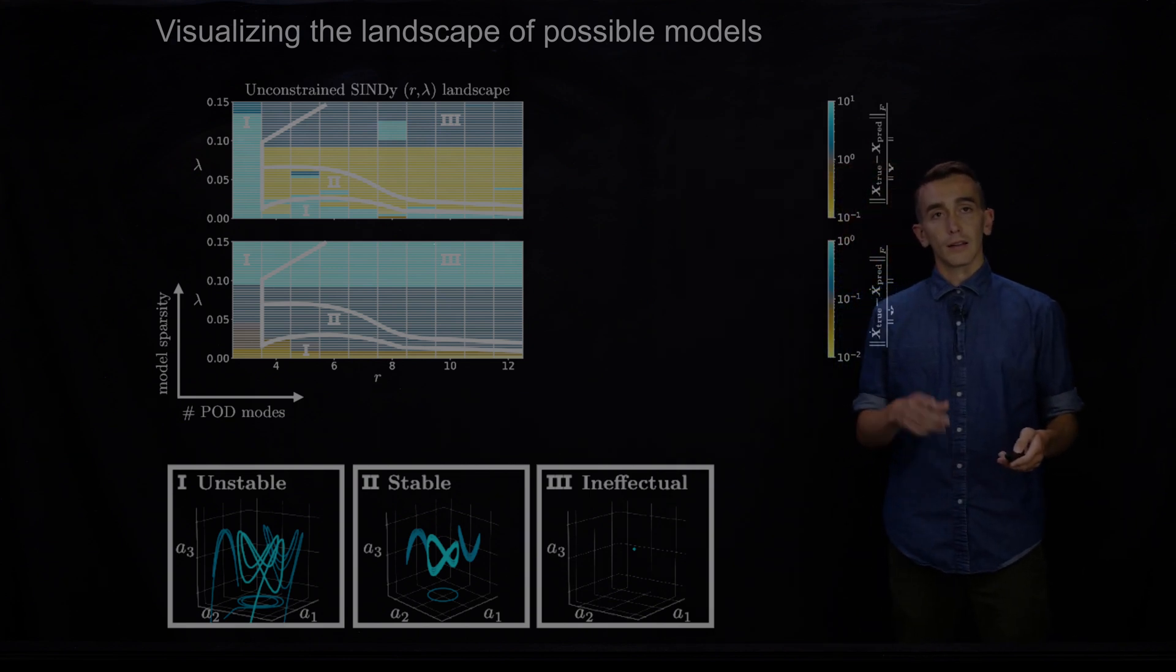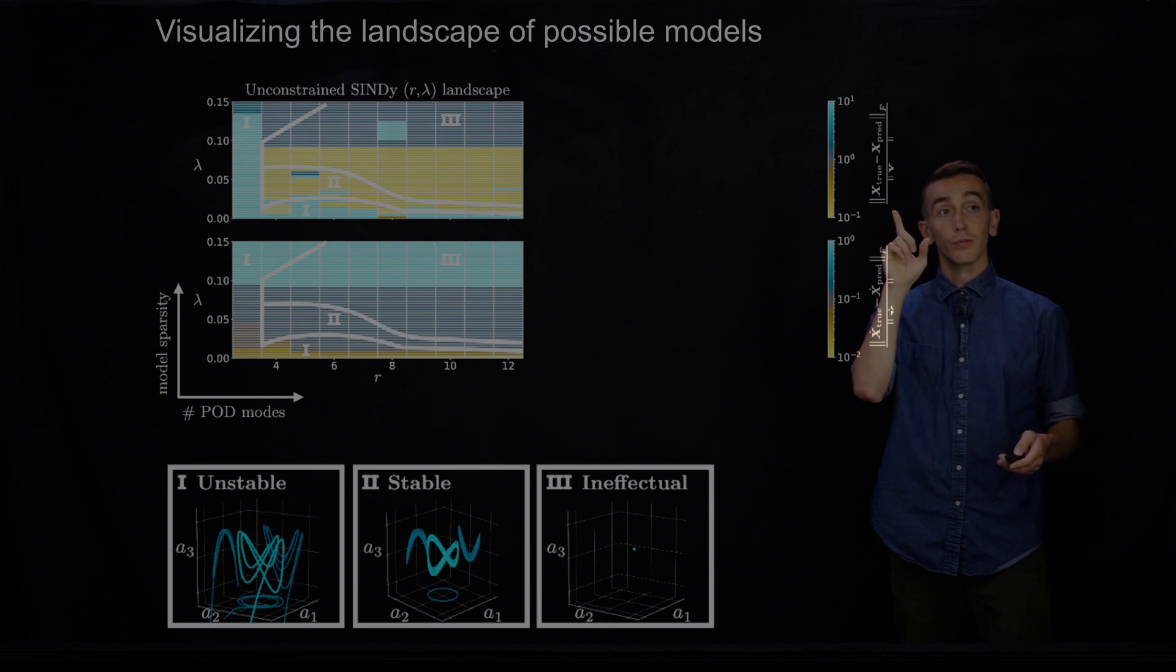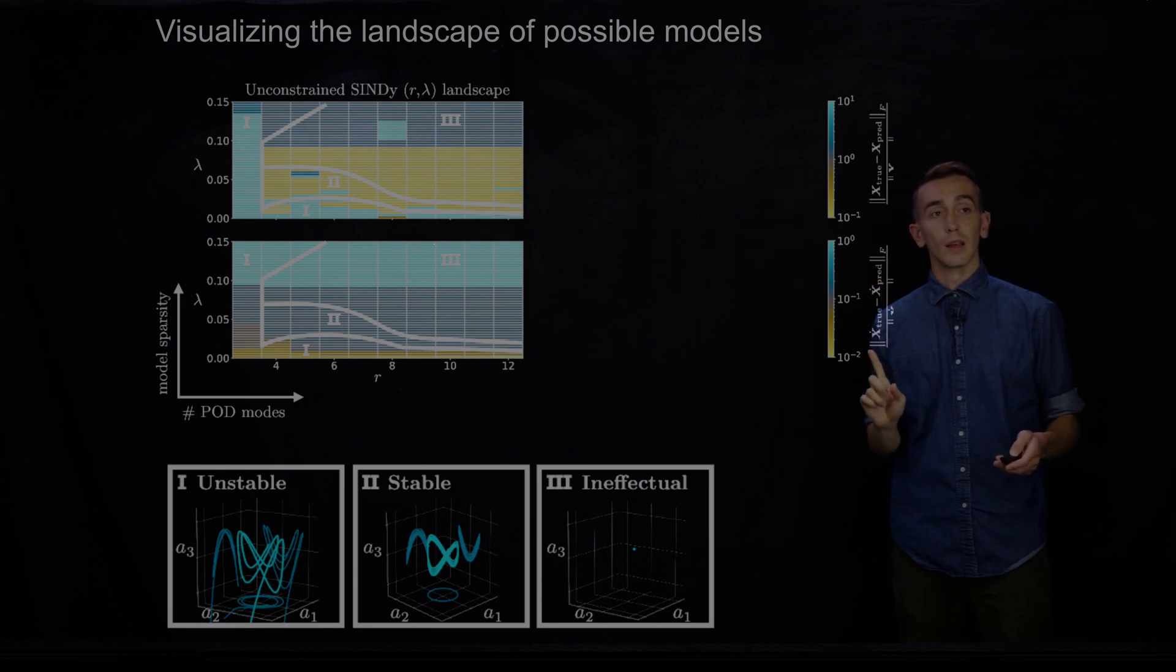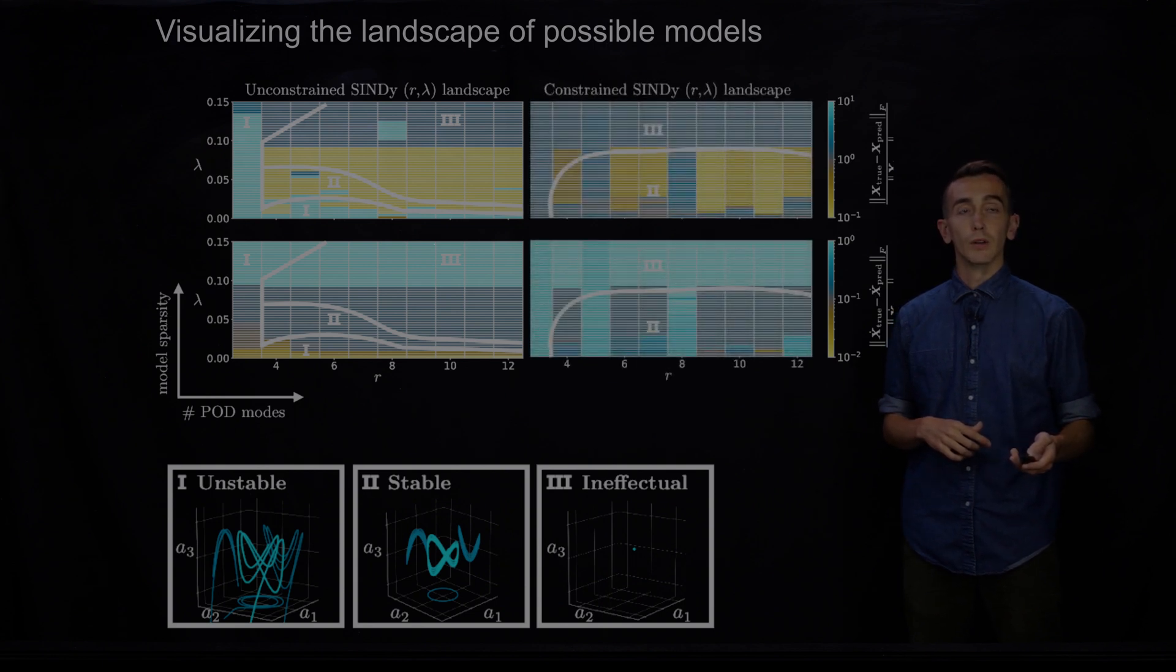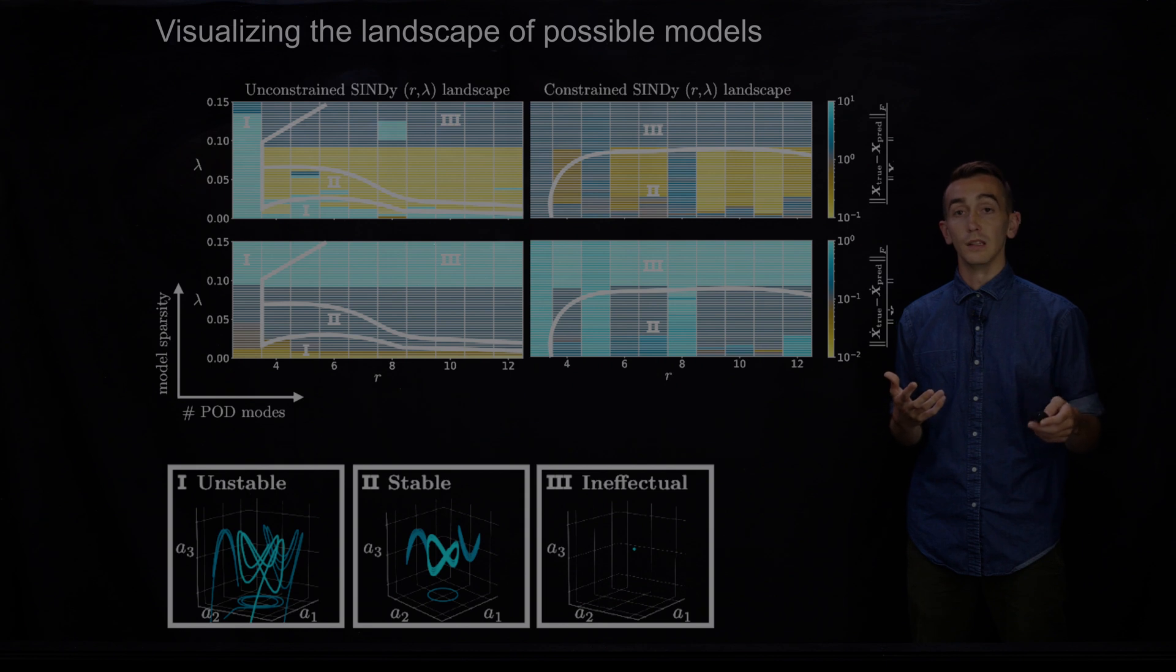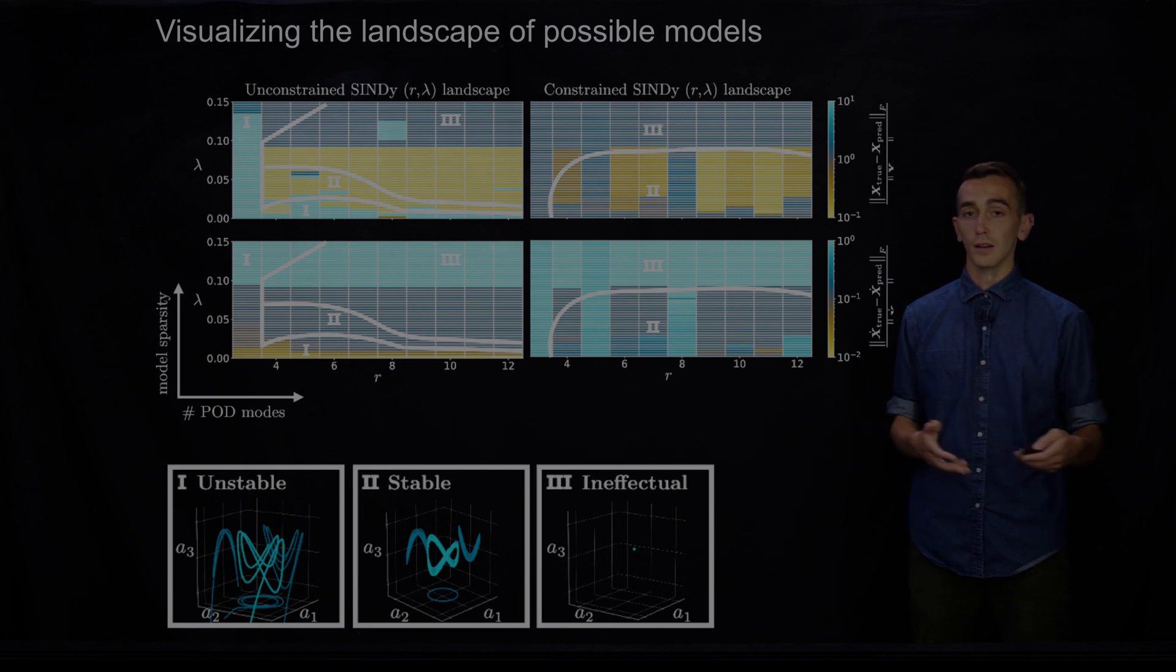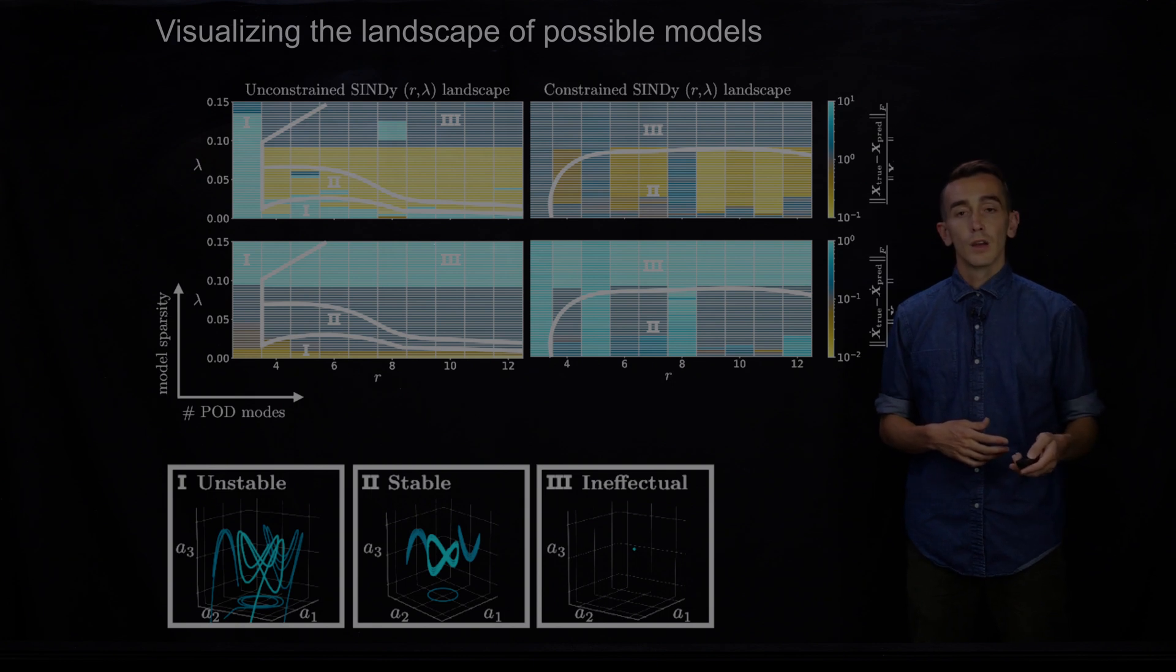What I want to, again, so I should have mentioned that these color bars here you're seeing is the Frobenius error in the evolution of the measurements and the same thing for the x dot. So the DDT of the measurements that you're taking. So we're comparing between the true and the predicted trajectories here. And then I just want to show you what it looks like when you actually constrain these things. So this constrained SINDy landscape, now what I'm showing you is these models where I built in global conservation of energy. And now what you see is this region one of instability vanishes. And you have this nice larger region of stable models that you can use and be confident they're not diverging in finite time. So this is really nice.